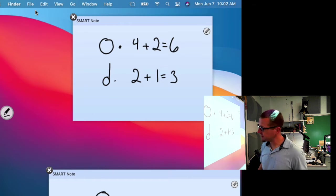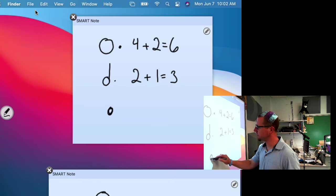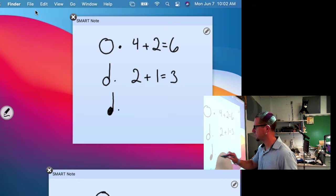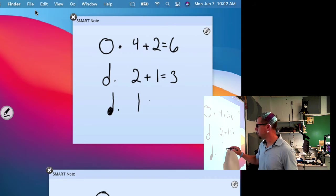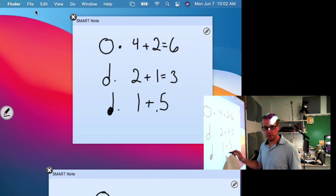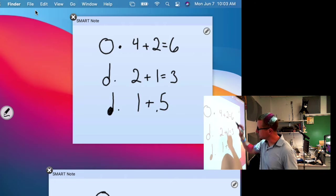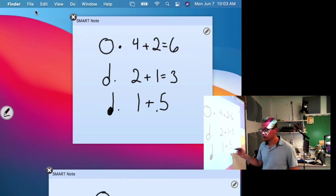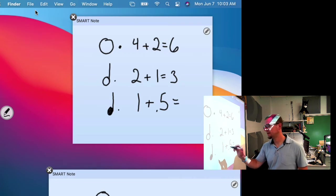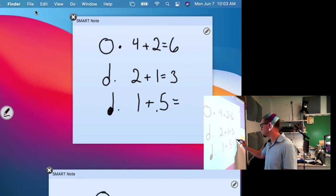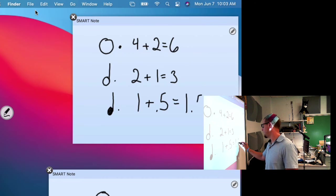Dotted whole note is worth six. Dotted half note is worth three. Dotted quarter note is worth one plus a half, right? Because the dot adds a half. So half of two is one, half of four is two, half of one is just 0.5. So that means that a dotted quarter note is equal to one and a half beats.